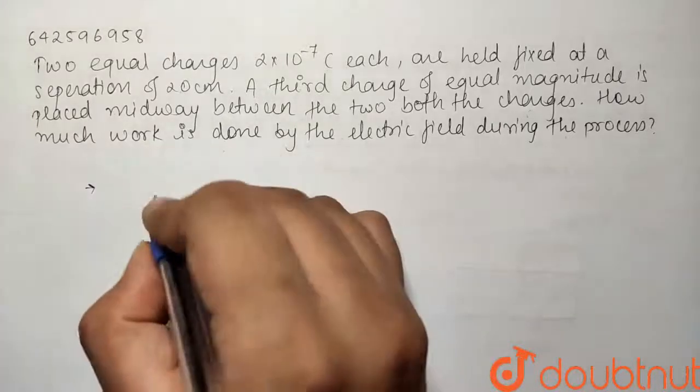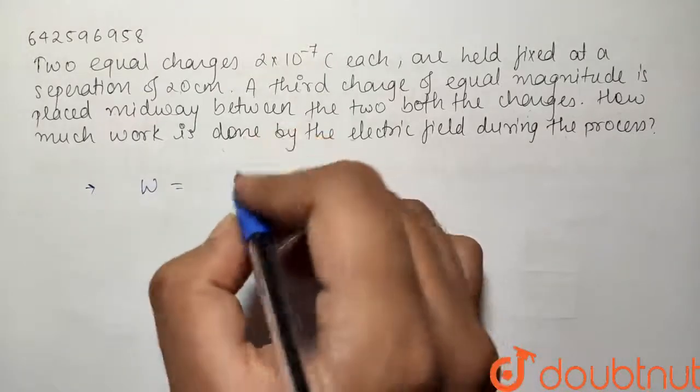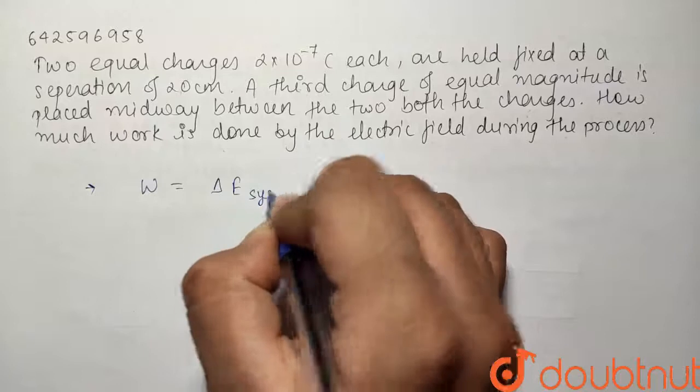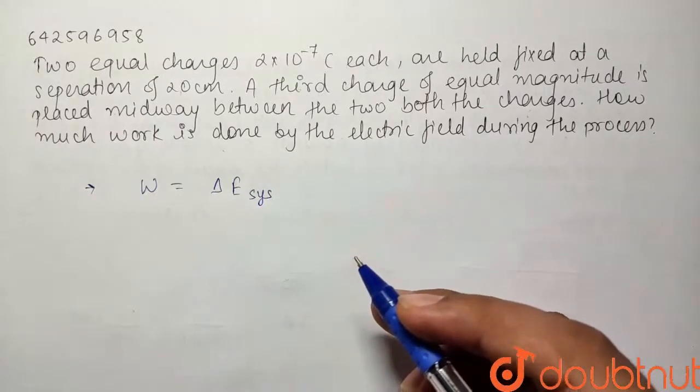So what we have is, we know that from work-energy equation, the work can be written equal to the change in energy of the system. So basically the work will be responsible for the change in energy of the system.